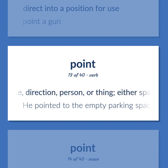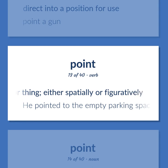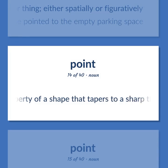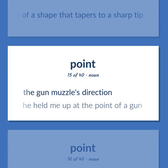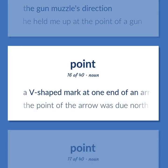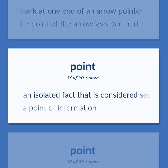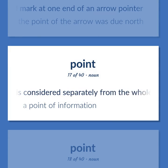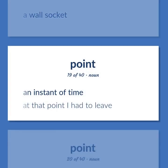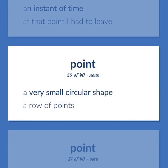Point: indicate a place, direction, person, or thing, either spatially or figuratively — he pointed to the empty parking space; the property of a shape that tapers to a sharp tip; the gun muzzle's direction — he held me up at the point of a gun; a V-shaped mark at one end of an arrow pointer — the point of the arrow was due north; an isolated fact that is considered separately from the whole — a point of information; a wall socket; an instant of time — at that point I had to leave; a very small circular shape — a row of points.